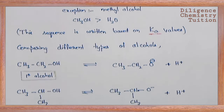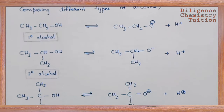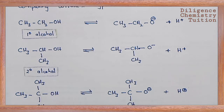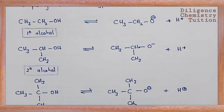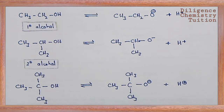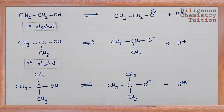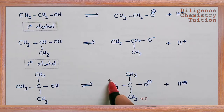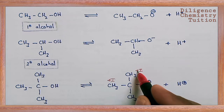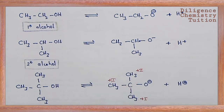Now comparing different types of alcohols — primary, secondary, and tertiary alcohols. We compare the stability of their alkoxide ions. Primary alcohols have one methyl group with +I effect, secondary have two, and tertiary alcohols have three +I groups. These +I groups push sigma electrons toward the oxygen, increasing the negative charge on the alkoxide ion.